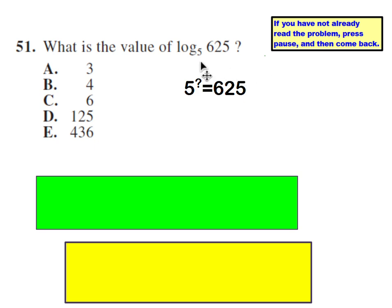Number 51, log base 5 of 625. This is basically asking 5 to what power equals 625? If you have just a very basic calculator, you can just try these out like 5 to the third equals 125, 5 to the fourth does equal 625, so that would be the answer.